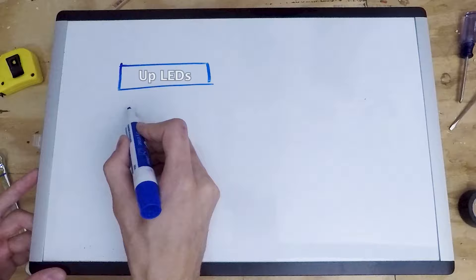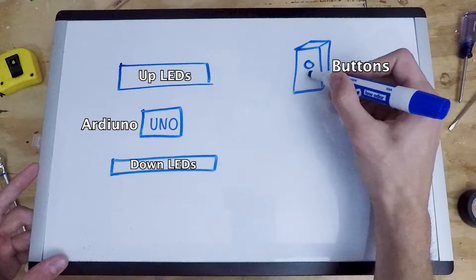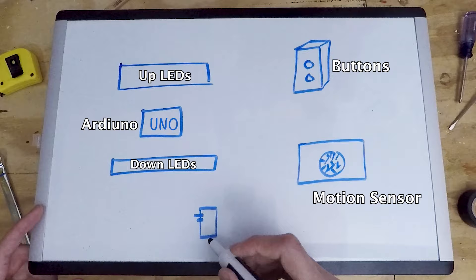Now it's time to talk about the LEDs. Real quick, we'll go over the overall setup. So we'll have the up LEDs and the down LEDs which will be run by the Arduino circuit board, and then we'll have two buttons and a motion sensor which will be used to turn them on and off. To power everything I'm going to use a three amp wall brick, which will be important because the LEDs will draw a decent amount of current.